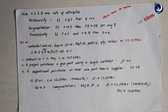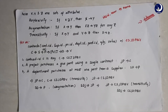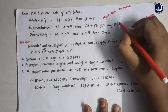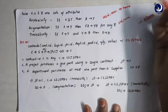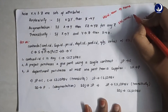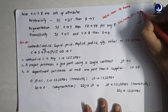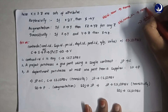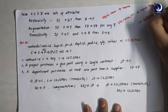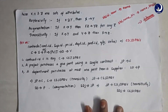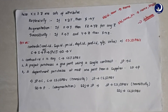The second axiom is augmentation: if X determines Y, then XZ determines YZ for any additional attribute set Z. For example, if student ID and name determine certain attributes, and we add another attribute like first name to both sides, that new combined dependency should also hold in that table.